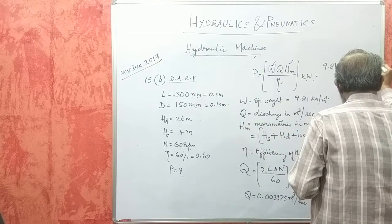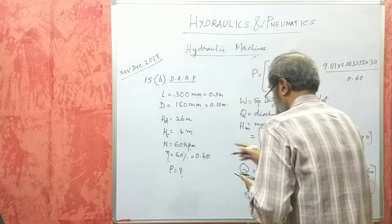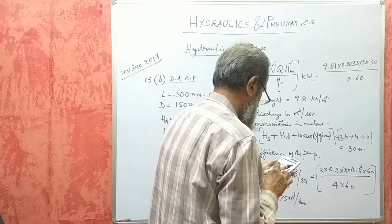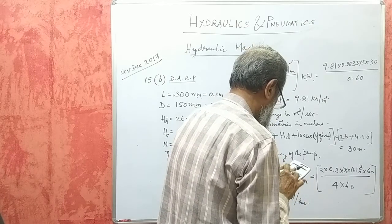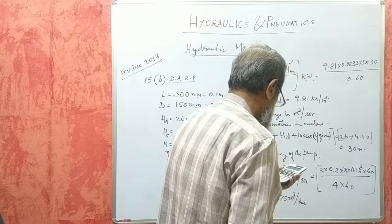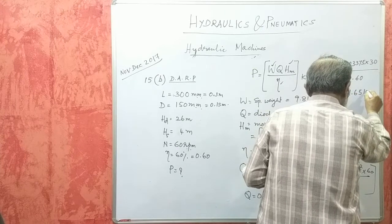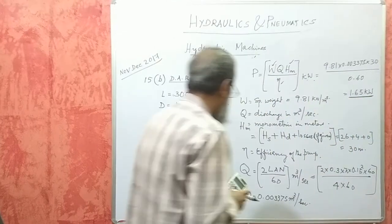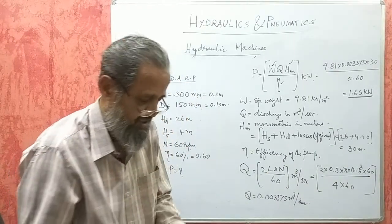W is 9.81, Q is 0.003375, HM is HS plus HD = 26 + 4 + 0 = 30 meters. So P = 9.81 × 0.003375 × 30 / 0.60, which works out to 1.65 kilowatts. This is the power of the motor required to drive this pump to deliver that discharge through that height.